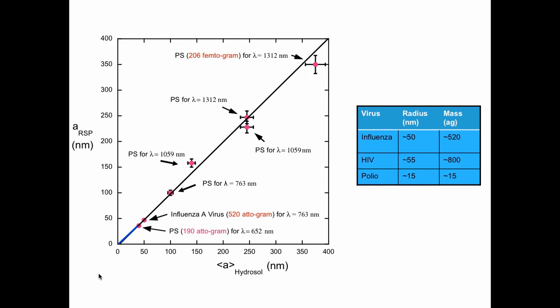So right now influenza can be determined. HIV can be determined. Polio is harder but work done at Caltech in Carrie Valhalla's group indicates that you can measure things this small rather easily, and then MS2 which is the smallest virus which attacks bacteria is also possible.